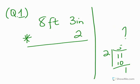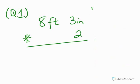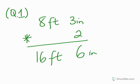Question 1: 8 feet 3 inches times 2. Let me erase this so you don't get confused. We start with the least unit on the right, which is inches. 3 inches times 2 gives us 6 inches. Then you ask yourself: what is the relationship between inches and feet? One foot makes 12 inches, but we've got 6 inches, so we are good — 6 inches is less than 12 inches, so we just write 6 inches. Then 2 times 8 feet gives us 16 feet. So our answer becomes 16 feet 6 inches.